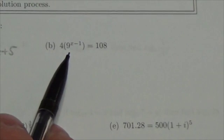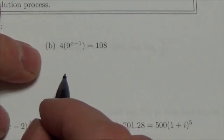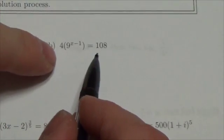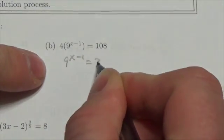Now, on the outset it looks to me like I might have to take the log of everything here, but before I do that, I should try to simplify this as much as I can. I notice that 108 is also divisible by 4, and when I divide both sides by 4, I get 9 to the x minus 1 is equal to 27.